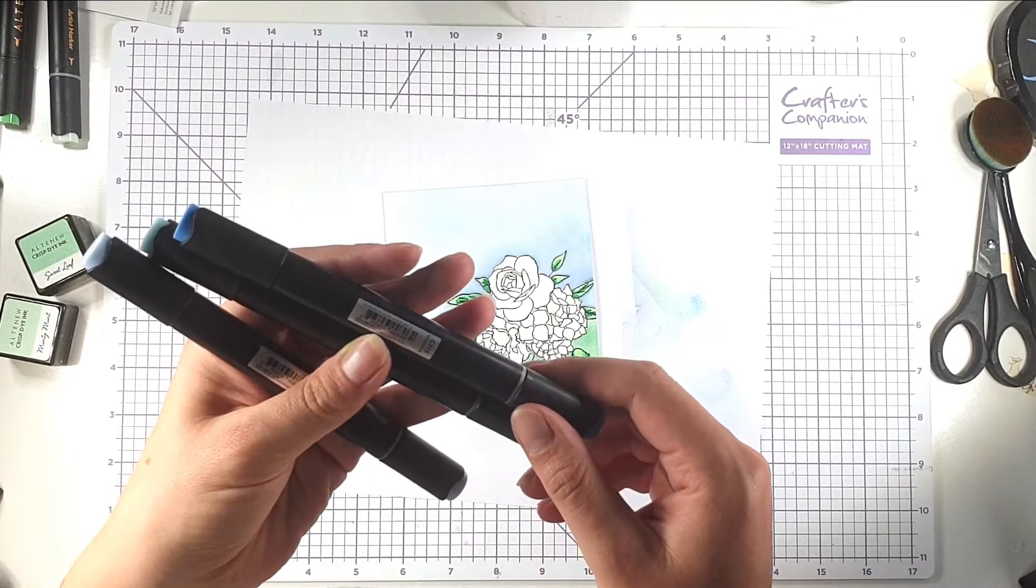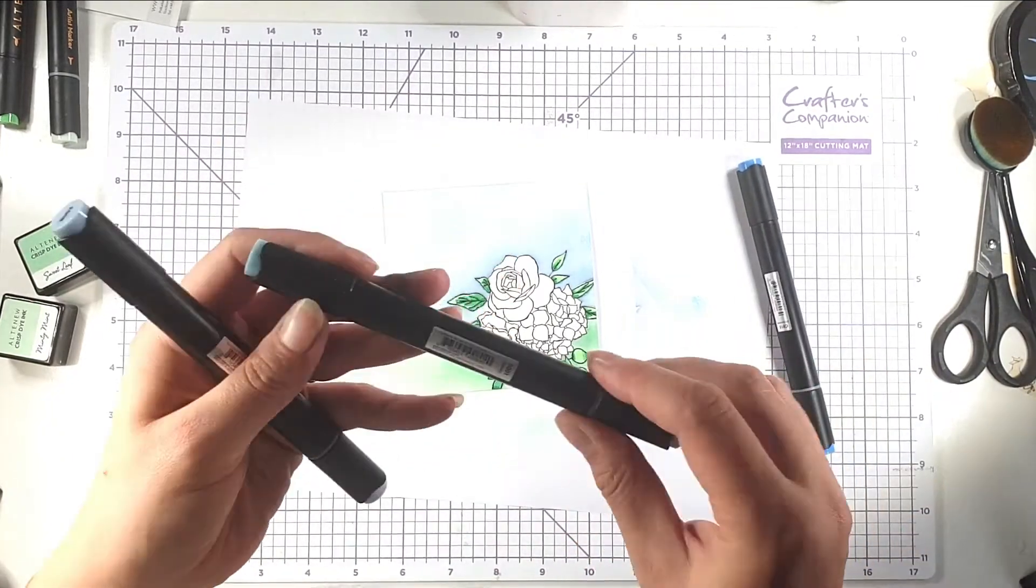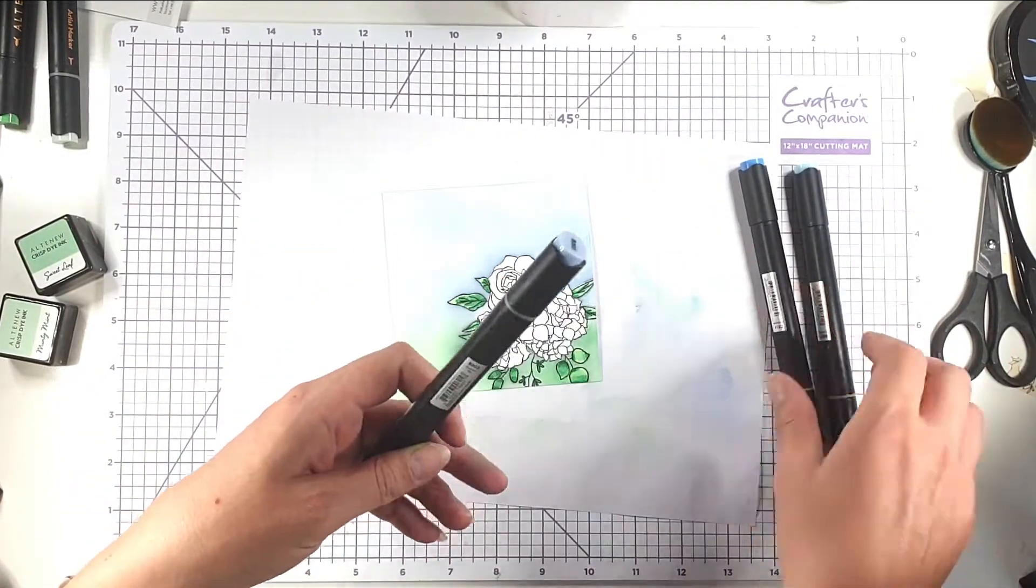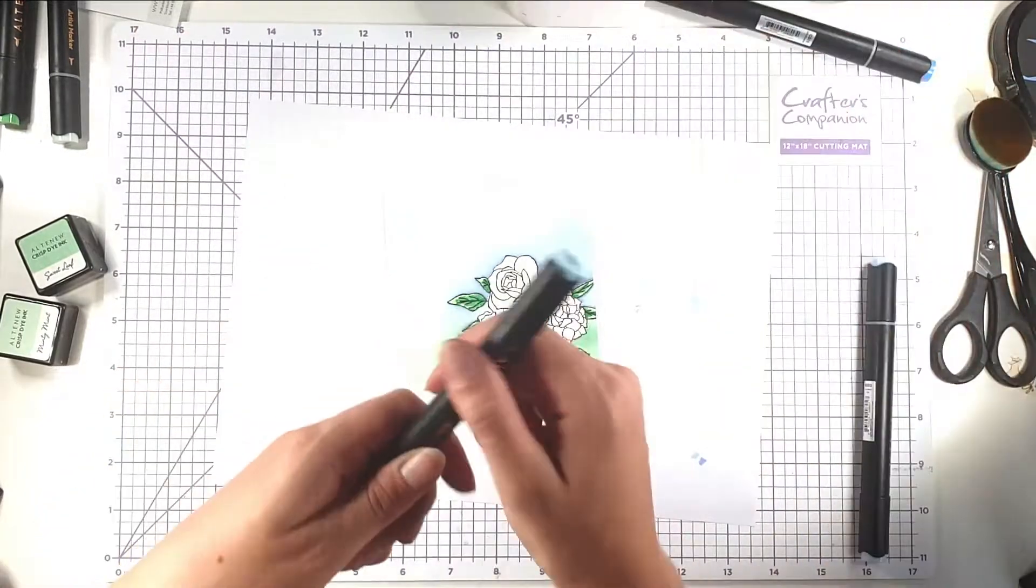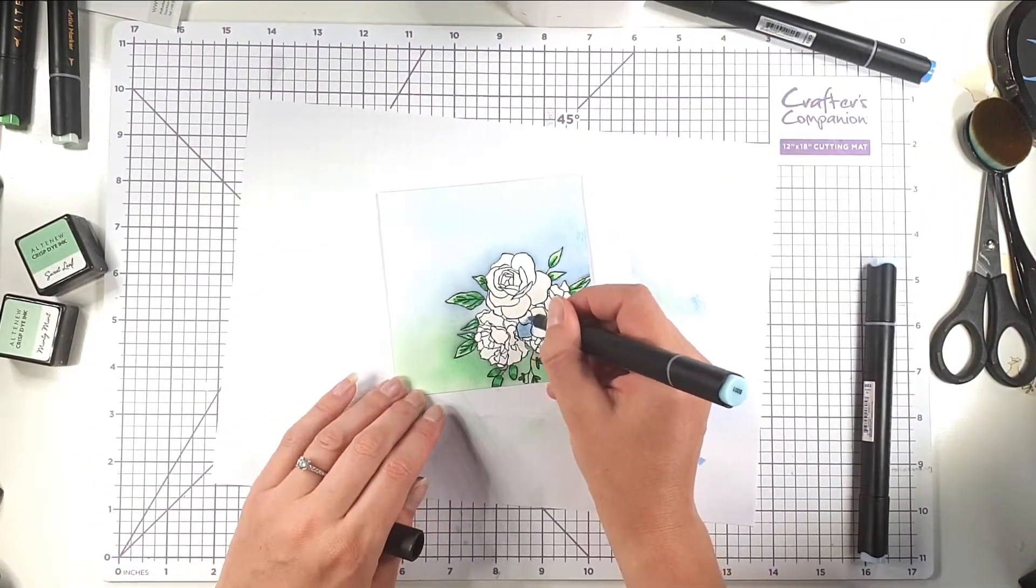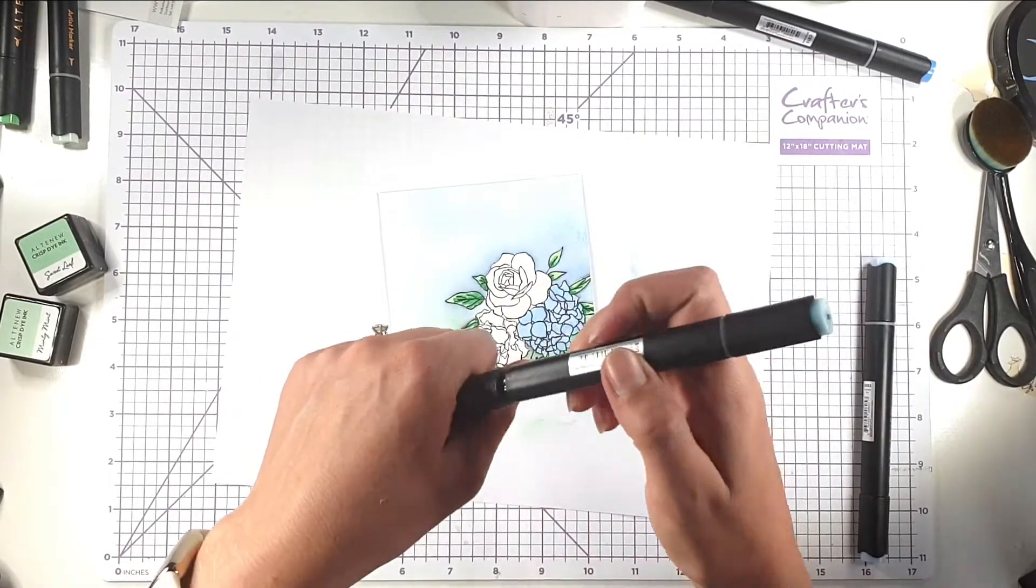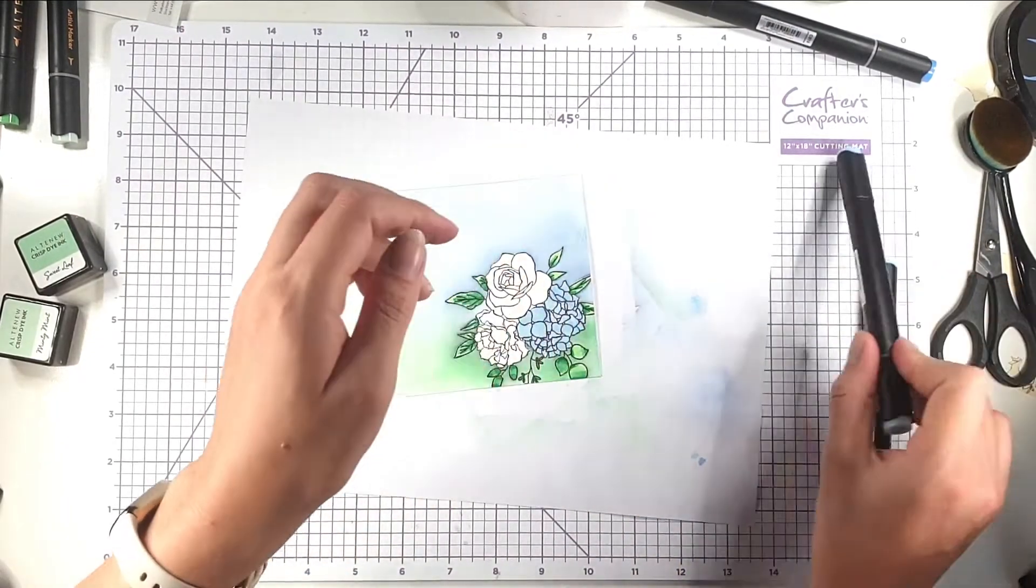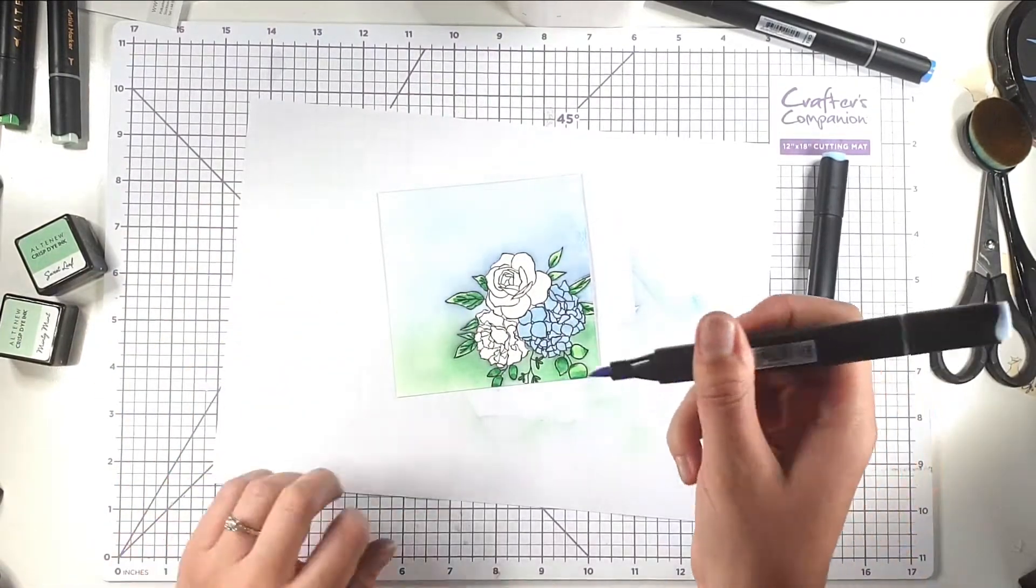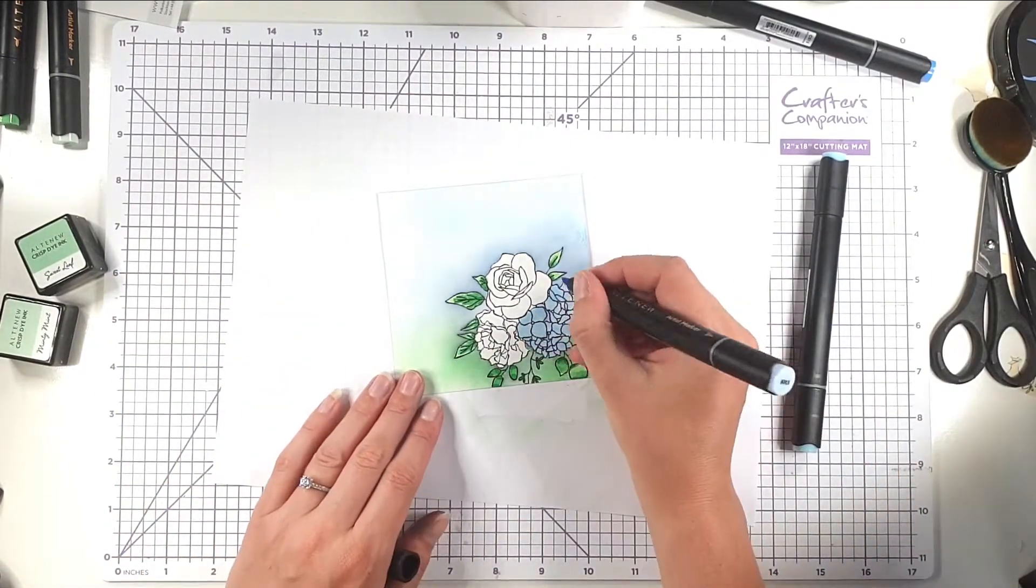So then I'm going to use these blues. I've got ultramarine, iceberg, and eastern sky, and actually I might just use the iceberg and the eastern sky. And I've just flat coloured everything with the iceberg, and then I'm going to go in and add a bit of definition with the eastern sky.